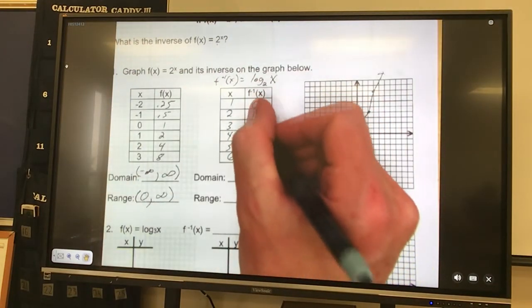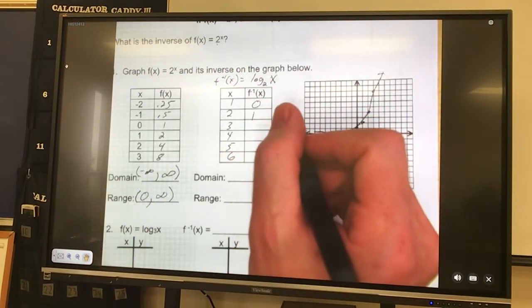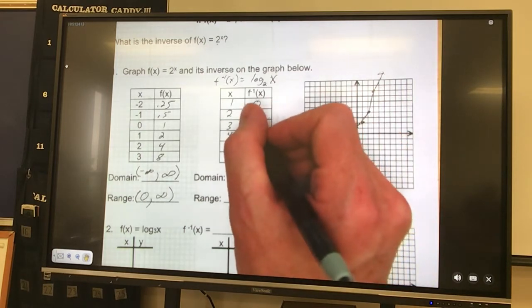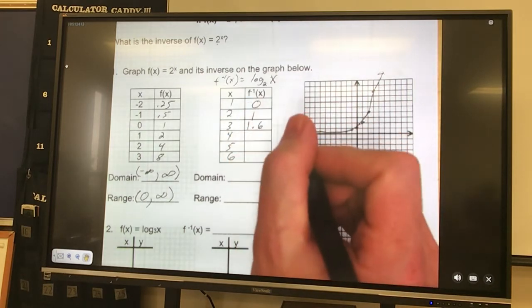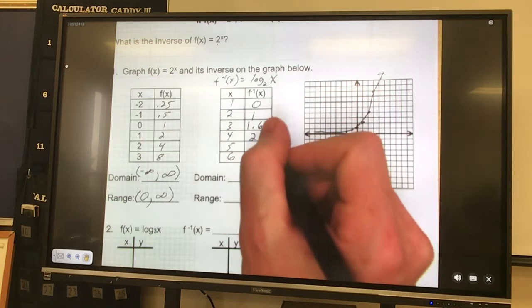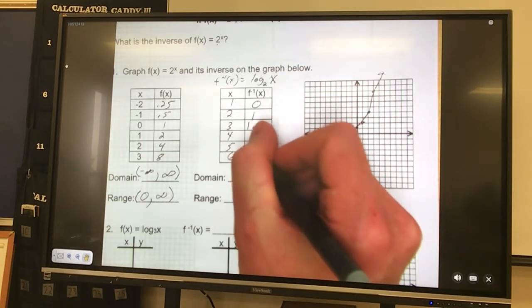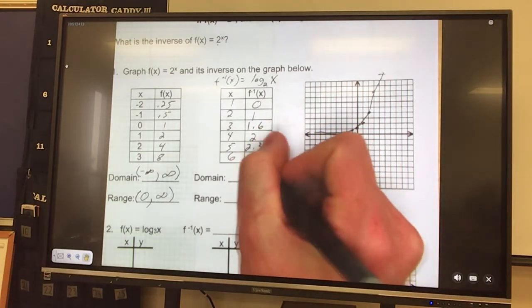So 1 is 0. 2 is 1. And we'll round to the nearest tenth. That's one decimal place. 3 is 1.6, 4 is 2, 5 is 2.3, and 6 is 2.5.